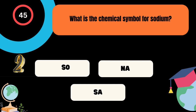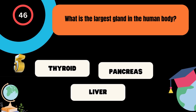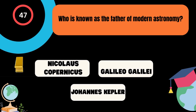What is the largest gland in the human body? A. Thyroid, B. Pancreas, C. Liver. And the correct answer is Liver. Who is known as the father of modern astronomy? A. Nicholas Copernicus, B. Galileo Galilei, C. Johannes Kepler. And the correct answer is Nicholas Copernicus.